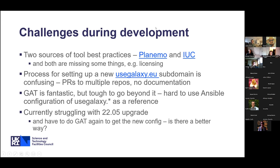There have been various challenges. When you get started it can be quite overwhelming, and a lot of things are biology-focused — if you don't know biology, it can be hard to follow some of the tutorials. More recently, I realized there are two sources of tool best practices: one in Planemo and one at the IUC, and both are missing some things. Bjorn raised an issue on our tools repository pointing out things we could improve, and a lot of those aren't documented anywhere else. Setting up the materials.usegalaxy.eu subdomain was quite confusing — it seemed to be a case of asking someone what to do rather than finding documentation, especially as it requires pull requests against multiple different repositories.